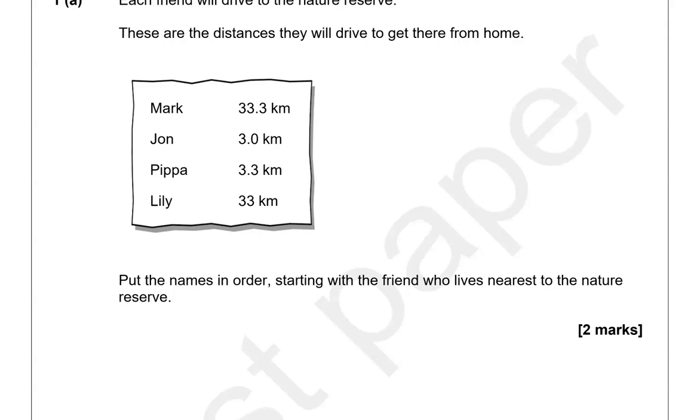We've got Mark, who will drive 33.3 kilometres. John, 3.0 kilometres. So 3.0, it means just 3 kilometres, it's the same thing. We've got Pippa with 3.3 kilometres, so that's more than 3. We've got Lily with 33 kilometres. So we've got to put them in order, starting with the friend who lives nearest to the nature reserve.